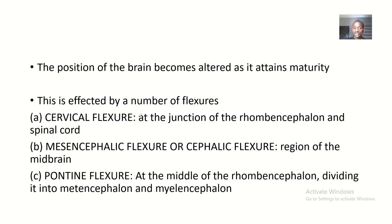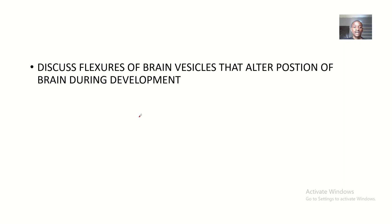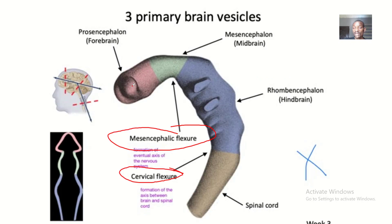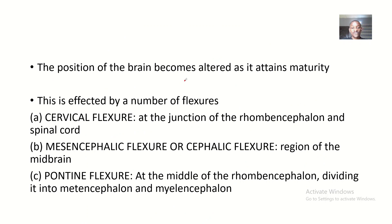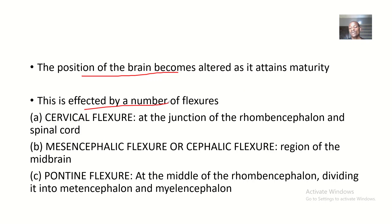So, flexures of the brain vesicles. These flexures — their function is basically to alter the position of the brain during development. The position of the brain becomes altered as it attains maturity. Now, this is affected by a number of flexures.